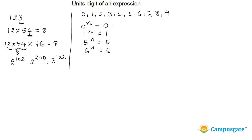You can check: 10 squared is 100, 10 cubed is 1000 — you always get 0 as the unit's digit. Similarly, if you consider 11: 11 power 1 has unit's digit 1, and 11 squared is 121, again the unit's digit is 1. Similarly, if you take 15 squared or 15 cubed, you always get 5 as the unit's digit. Similarly for 6.